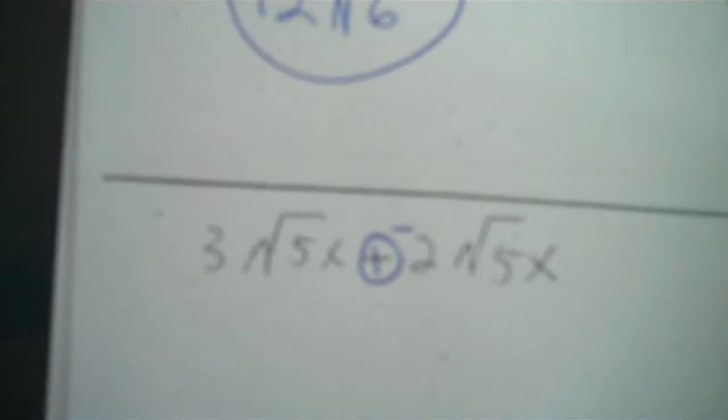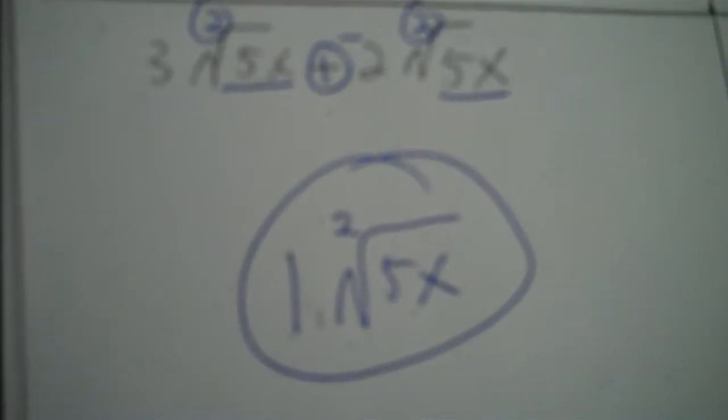Then a minus becomes plus negative. Both twos and the insides match — the expressions on the inside match — so I put what that match is, and then I add three plus negative two. That's one. It's very similar to combining like terms.